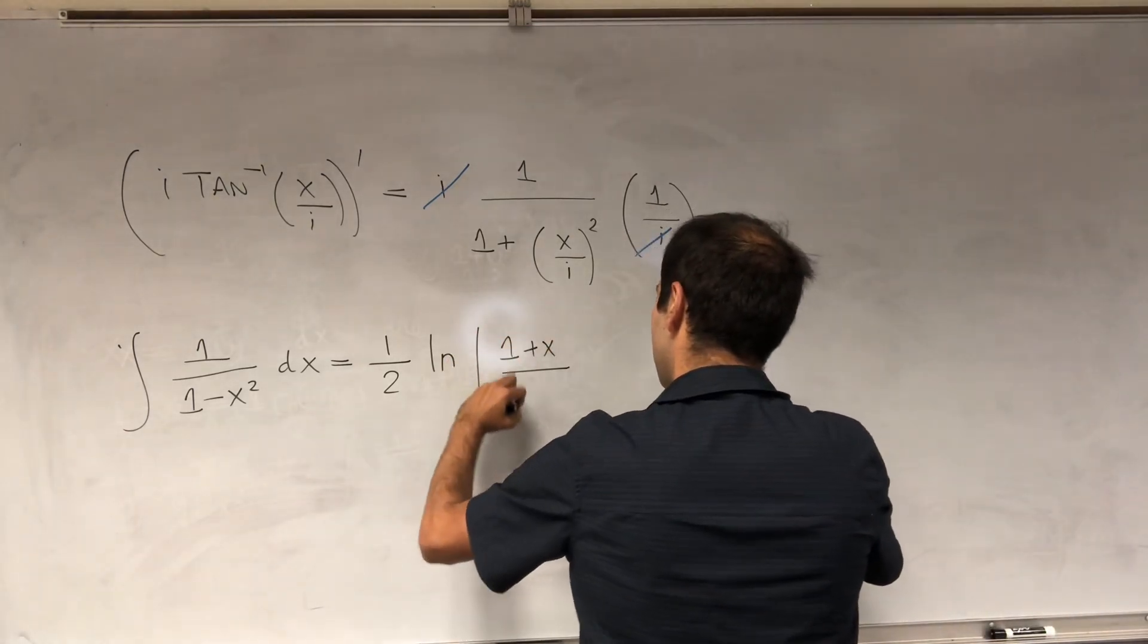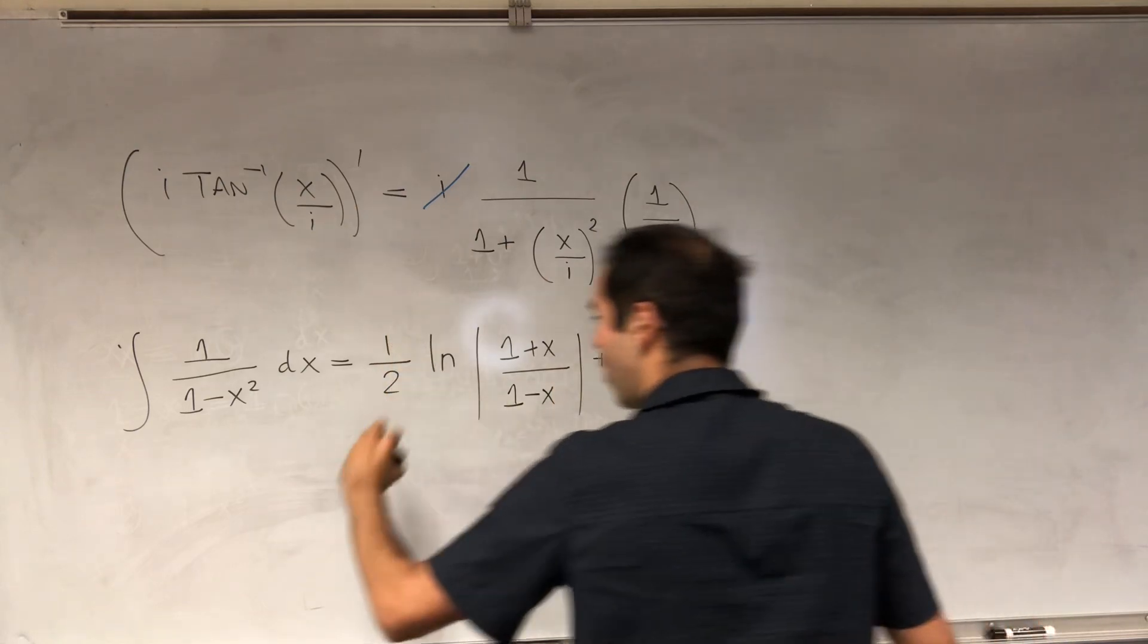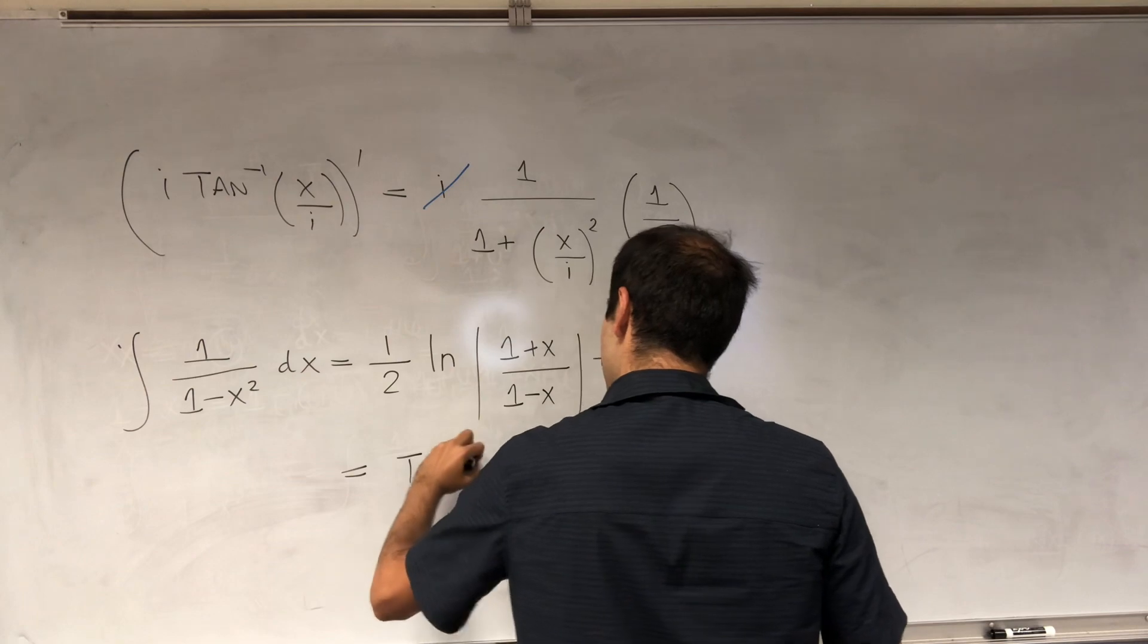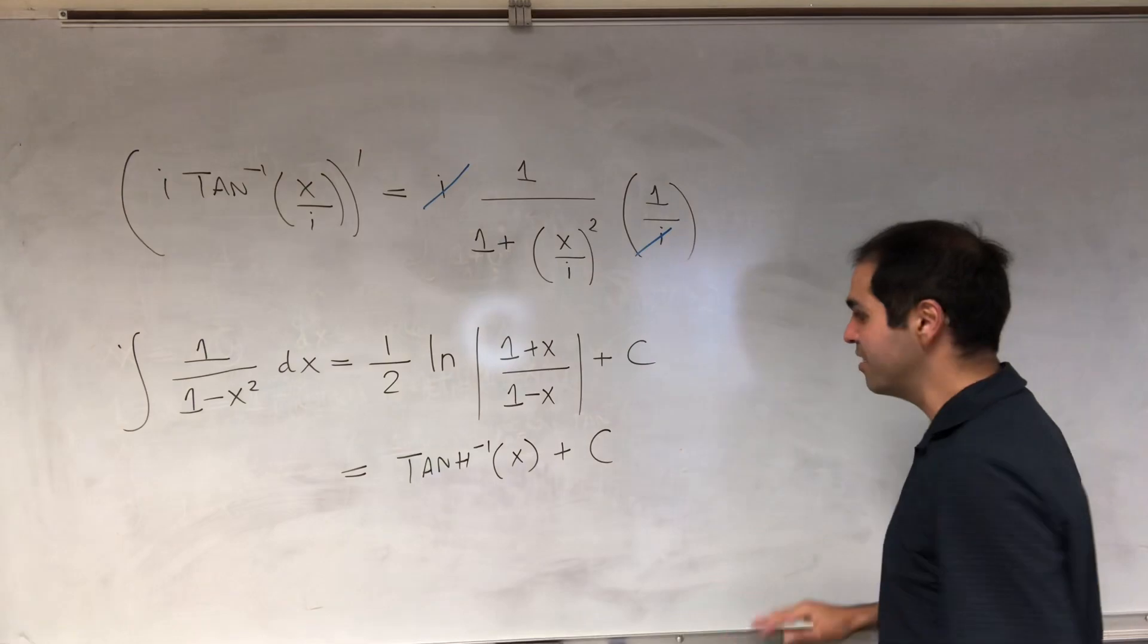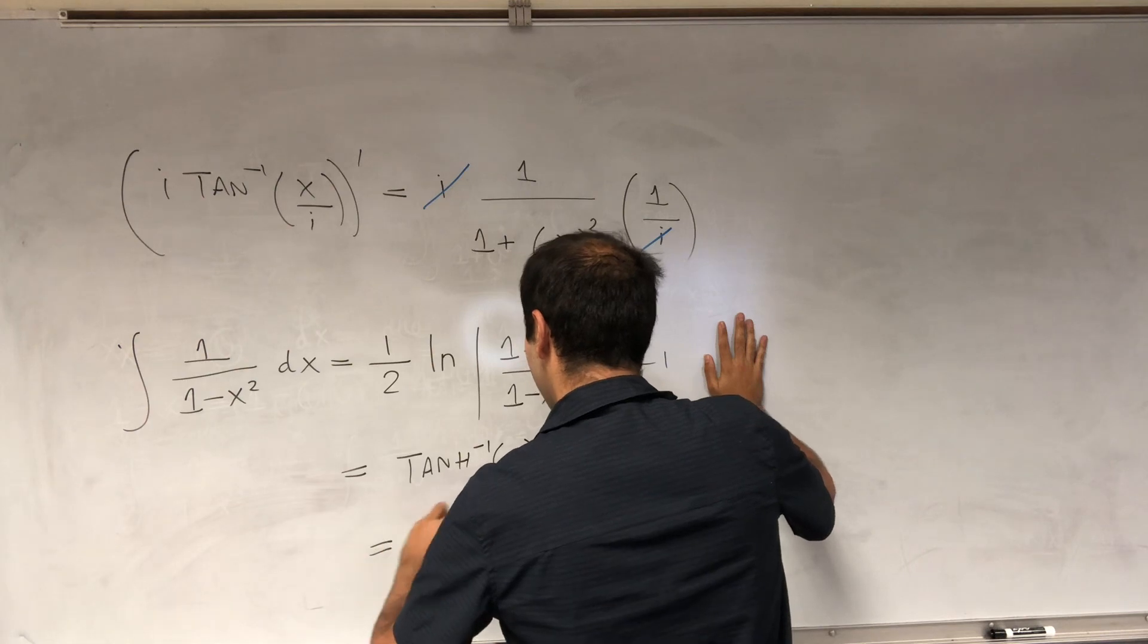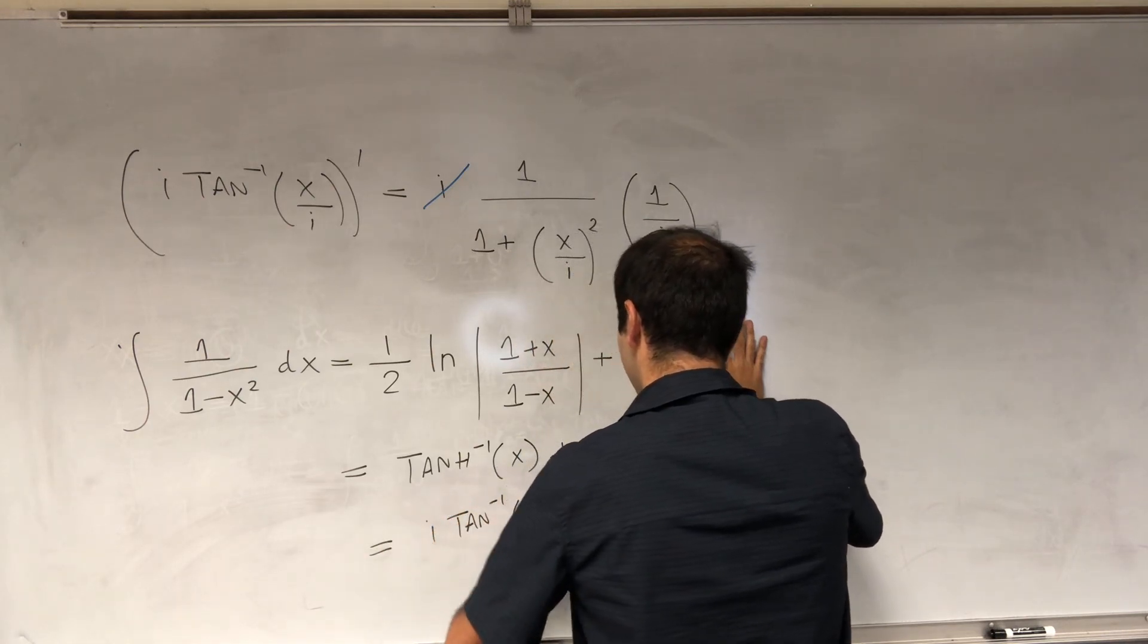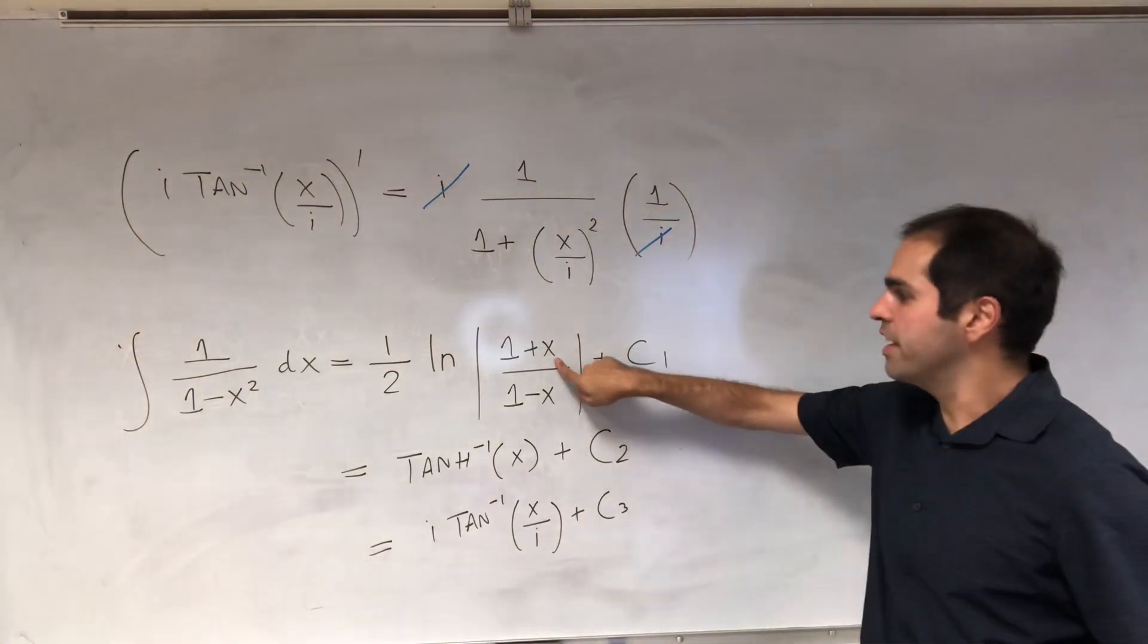plus some constant. But it's also equal to arctangent of x plus some different constant, let's say c1, c2. And now we've found that it's also equal to i times arctangent of x over i plus possibly some different constant. And the cool thing is,